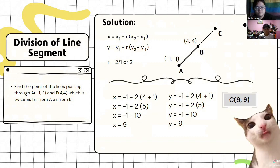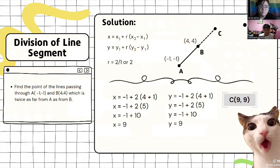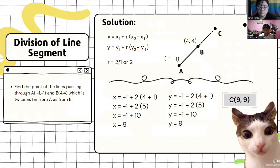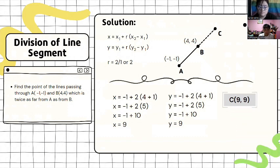To illustrate the given, two points is given, which is point A and B, and an external point, which is C, which is based from the statement of twice as far from A as from B.